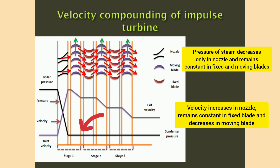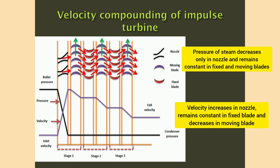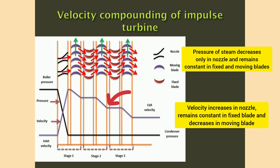Looking at the pressure variation in the velocity-compounded turbine, shown in black: steam pressure decreases from boiler pressure to condenser pressure in the nozzle, and remains constant in fixed and moving blades. Velocity variation is shown in blue: velocity increases in the nozzle and decreases when steam passes through moving blades. Velocity remains constant through fixed blades and again decreases in moving blades. Thus, the velocity of steam is regulated in each stage — this is velocity compounding of impulse turbines.